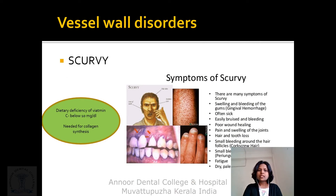The first vessel wall disorder is scurvy, which is deficiency of vitamin C when levels are less than 10 milligrams per deciliter. Symptoms of scurvy include swelling and bleeding of the gums, easy bruising and bleeding, and poor wound healing, because vitamin C is needed for synthesis of collagen, which maintains the integrity of blood vessels.